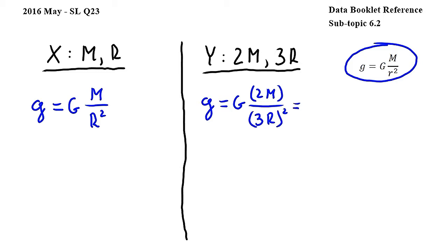Working further, we get g times 2m over 9r squared, and moving 2 over 9 to the front of this expression.